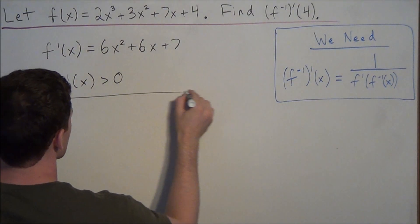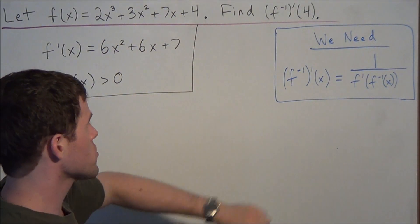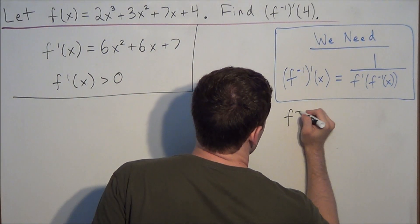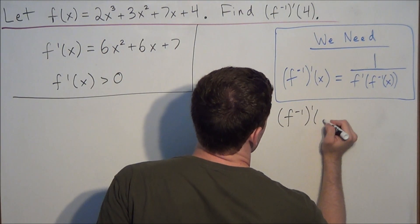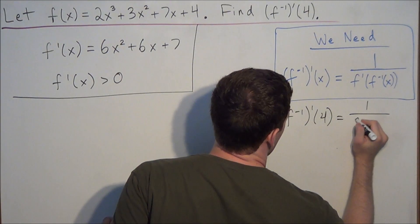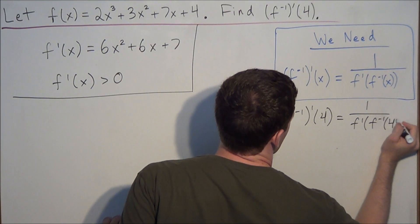So this tells us that if we use this equation, the derivative of the inverse at 4 is equal to 1 over f prime at f inverse of 4.